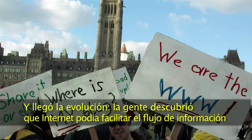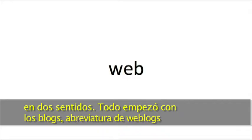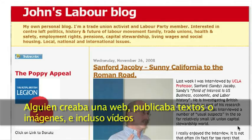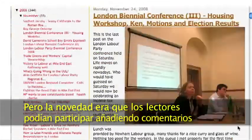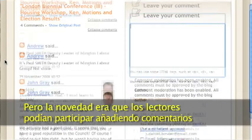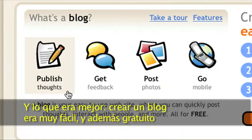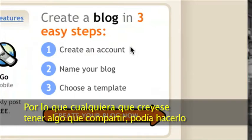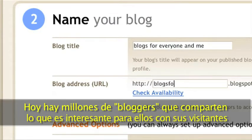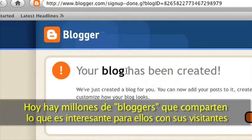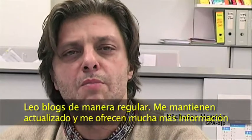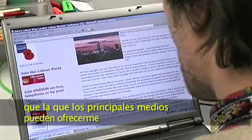And then a revolution came. People discovered that the Internet could be used to have information flow in two ways. It all started with so-called blogs, short for web blogs. Someone sets up a website, publishes text, pictures or even videos. But, and that was new, the readers could participate by adding comments. Setting up your own blog became easy to use and free of charge. So now everybody who feels they have something to share can do it. Today there are millions of bloggers sharing what's interesting to them. I read blogs on a regular basis — they keep me updated and offer far more information than mainstream media could ever offer.